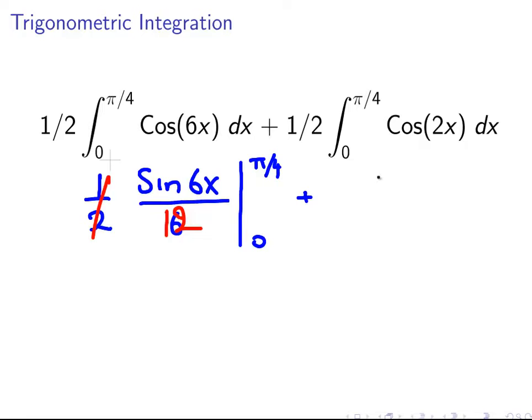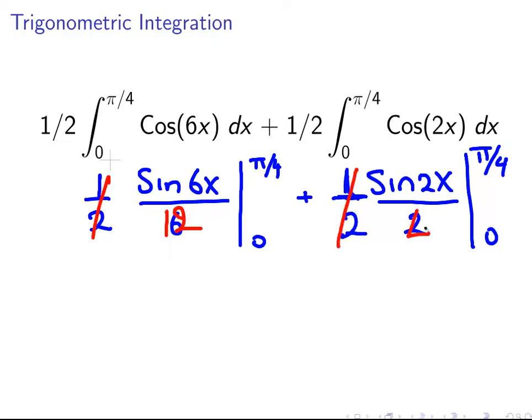What is the integral of cos2x? Well that is sin 2x all over 2. And we have, again we have the half. And we have the limits of integration, pi over 4 and 0. And once again we can just simplify that expression. We can just put a 4 there. So we have sin 6x over 12 with the limits of integration, plus sin 2x over 4 again with the limits of integration.